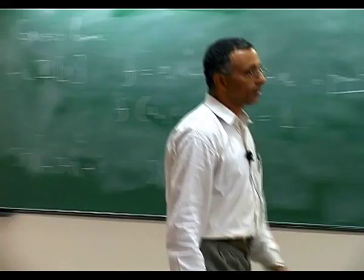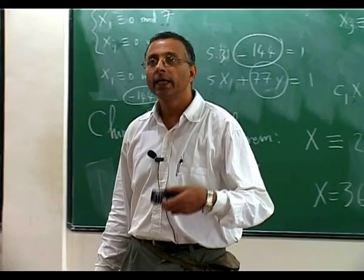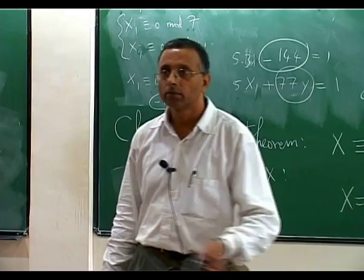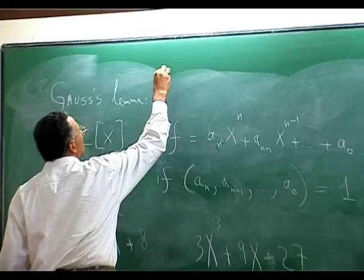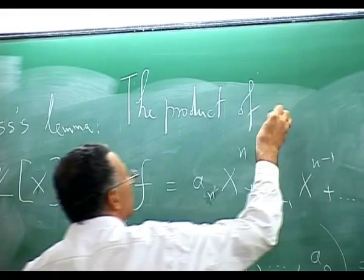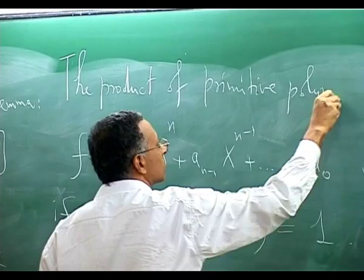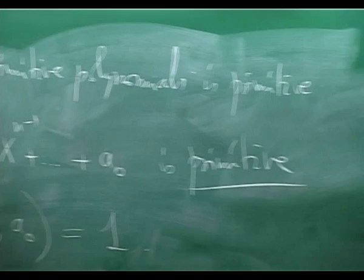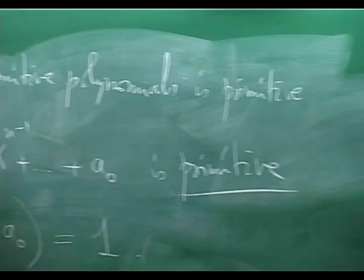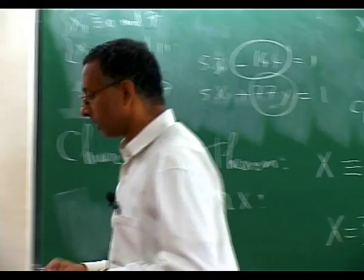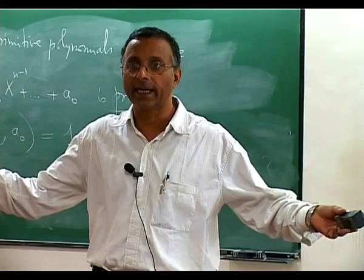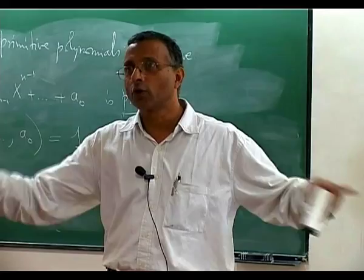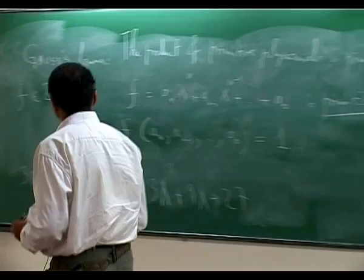The statement of Gauss's Lemma is then a very simple-looking statement: if I multiply two primitive polynomials, the product is also primitive. That is, the product of primitive polynomials is primitive. If I take the HCF of all the coefficients I get in the product, I still get 1 — that is the claim.